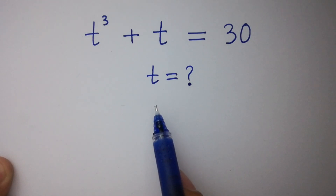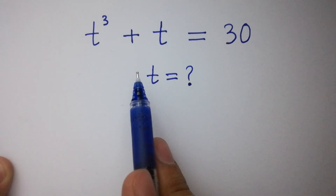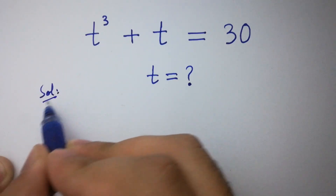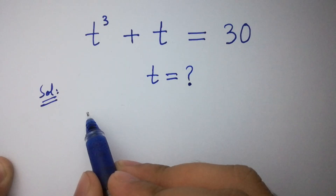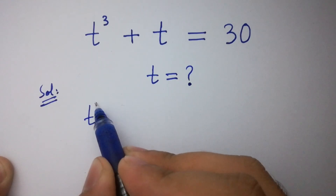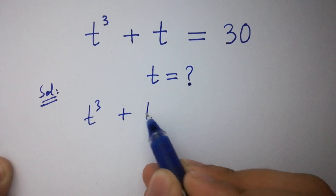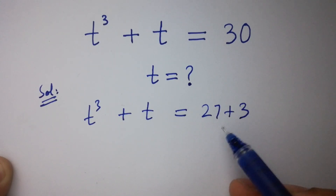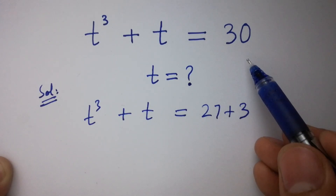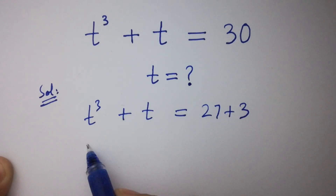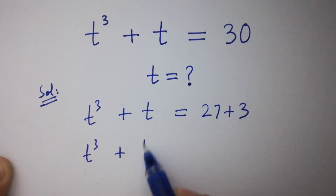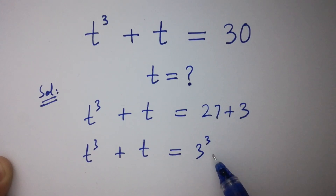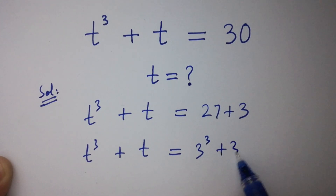Hello friends, find the value of t if t cube plus t equal to 30. It can be written as t cube plus t equal to 27 plus 3, since 27 plus 3 is the same as 30. And 27 is the same as 3 cube, since 3 times 3 is 9 and 9 times 3 is 27, plus 3 as it is.